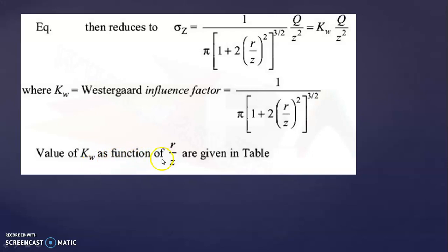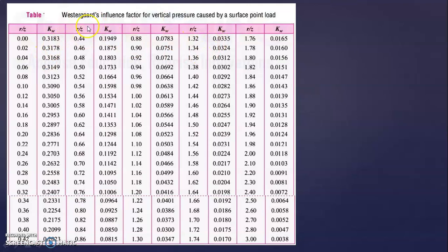Values of K_W as a function of R/Z are given in a table. Just as in the Boussinesq equation where K_B was found using the R/Z ratio from a table, here the Westergaard influence factor table gives K_W for R/Z ratios ranging from 0 to 3, with values at 0.02, 0.04, 0.06, up to 0.44 and beyond, covering the full range.